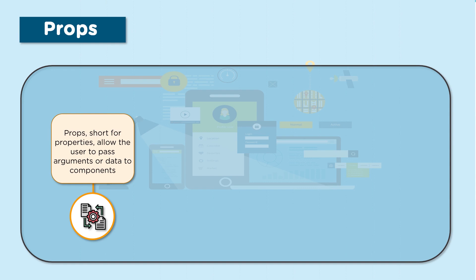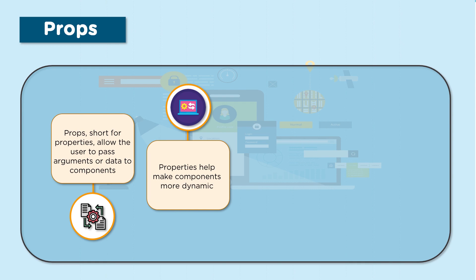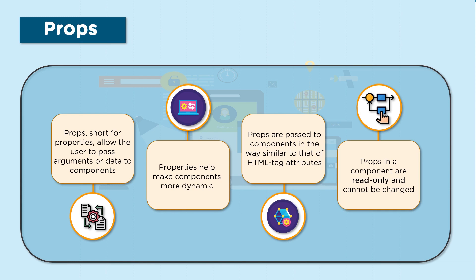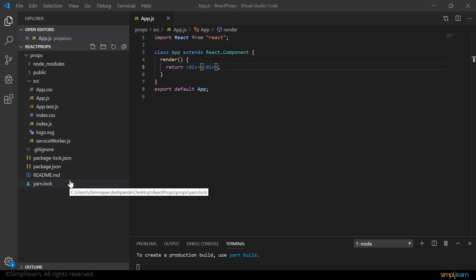Props — short for properties — allow the user to pass arguments or data to components. A parent component can pass additional information to its children using props, making components more dynamic. Props are passed similarly to HTML tag attributes. Props in a component are read-only and cannot be changed; children components cannot modify the props sent by the parent.